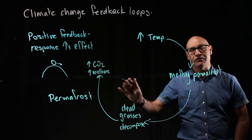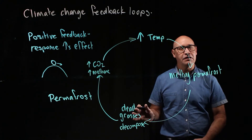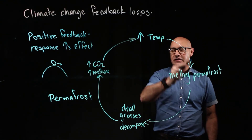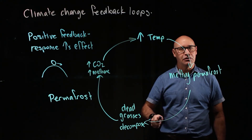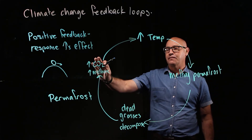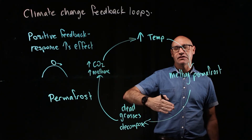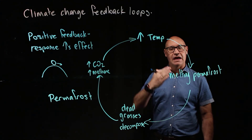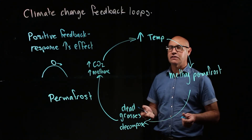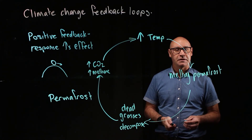As greenhouse gases, they contribute to increasing global temperatures, so again we have a positive feedback loop. With positive feedback loops, the response increases the effect, so it accelerates out of control. That's a positive feedback loop that affects global warming.